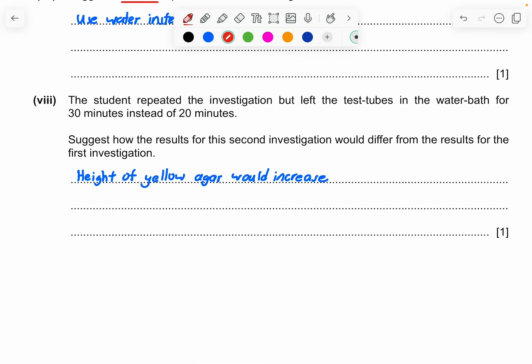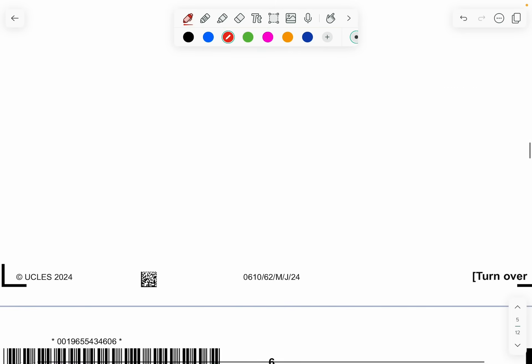Part 8, the student repeated the investigation but left the test tube in the water bath for 30 minutes instead of 20 minutes. Suggest how the result for this second investigation would differ from the results for the first. Of course, when you leave it longer, you didn't keep it constant. What happens is that the height of the yellow agar would continue to increase. So this is your final answer.